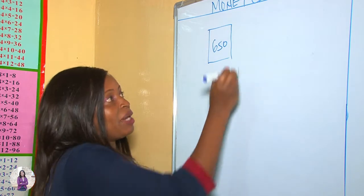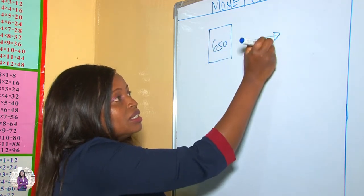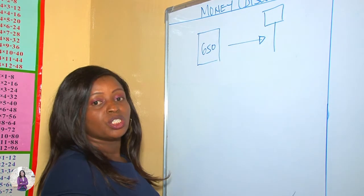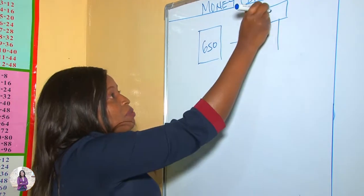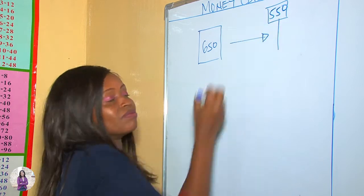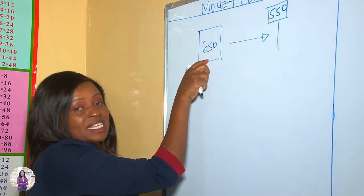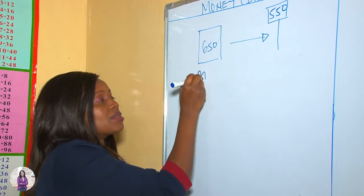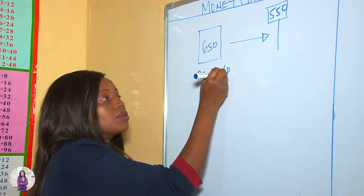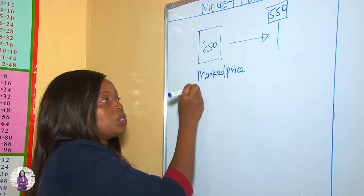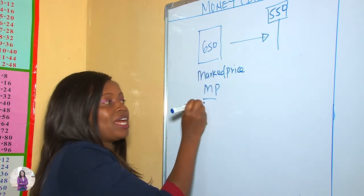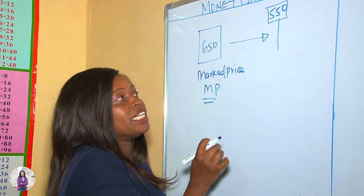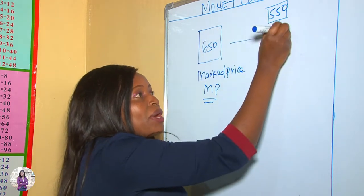Let's say you see a price of 650, and just next to it there's a tag showing 550. The initial price of 650 is what we call the marked price — we can abbreviate it as MP. The price shown on the tag, 550, is what we call the buying price.